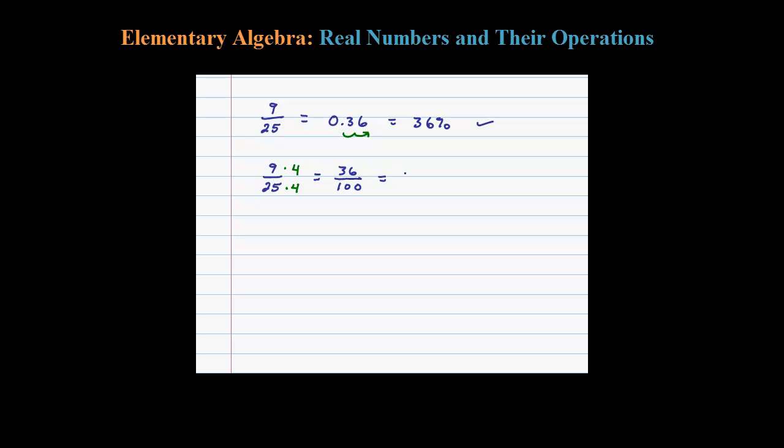Now the definition of a percent is this many parts out of 100, so that's equal to 36 percent by definition. So two ways to do it: the most common way is to divide and move the decimal place. This one's very special because I can simply multiply by 4 and get 100 in the denominator and use the definition. Either way you get the percentage.